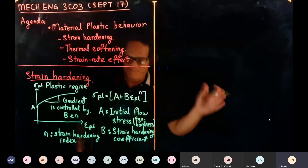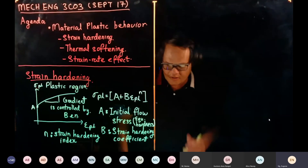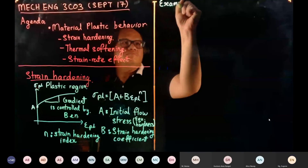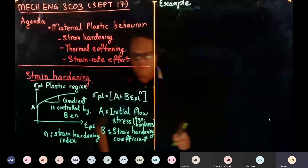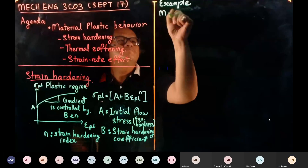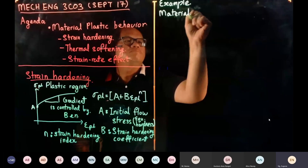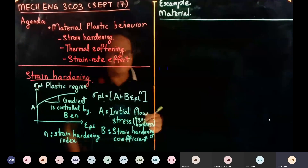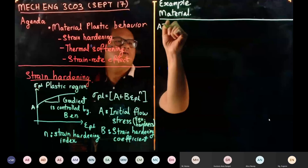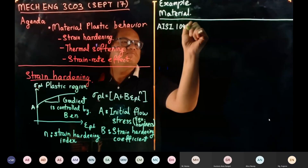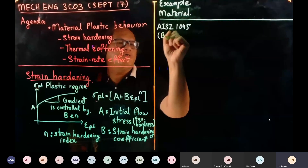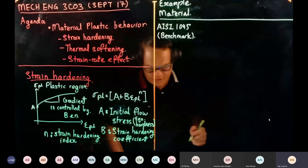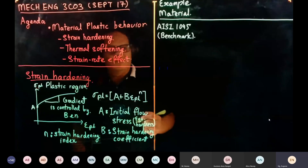Now we're going to look at a few different materials in the steel family. The first material is AISI 1045, which is usually our benchmark — a reference material. Then we'll look at Usibor 1500, Dual Phase Steel 600, and TRIP 800.